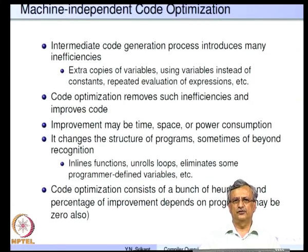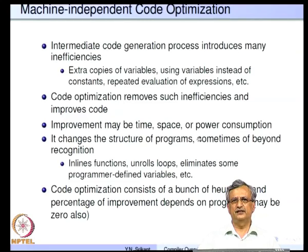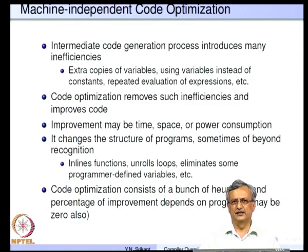Machine-independent code optimization is necessary because intermediate code is very simple and the intermediate code generation process introduces many inefficiencies — extra copies of variables, constants put into variables and then used, and expressions evaluated again and again. Code optimization removes such inefficiencies and improves code in terms of time, space, or power consumption depending on requirements. For efficient servers, time and memory optimization are needed; for embedded systems, power consumption may need to be minimized. Code optimizers also change the structure of programs — sometimes beyond recognition — by inlining functions or unrolling loops.